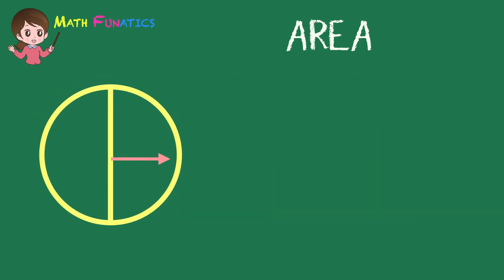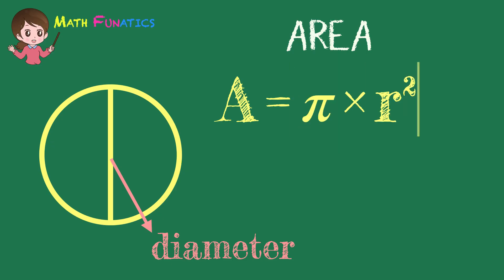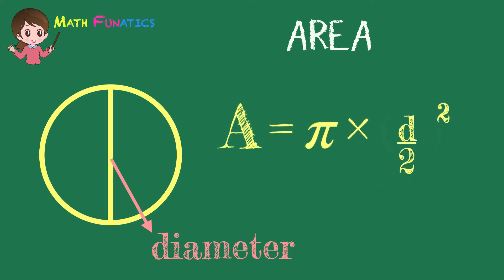How about if the given dimension of a circle is its diameter instead of its radius? In our previous examples, we used A equals pi times the square of r. Remember that twice the radius of a circle is its diameter. So, we may write it as d over 2, which means half of the diameter.